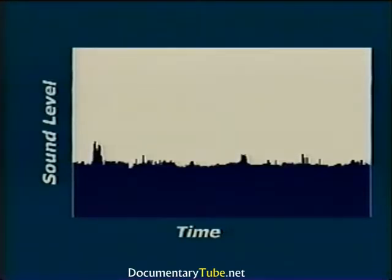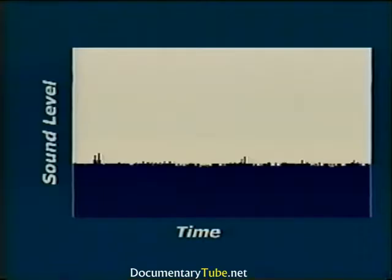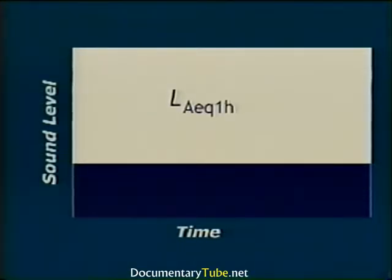To illustrate the equivalent sound level, the sound pressure level recorded at one location over time is first shown. This time history reveals peaks and dips caused by loud and quiet sounds during the time period. Applying the LAeq1H noise descriptor, the sound pressure level averages and the plot flattens out. This sound descriptor should be applied to continuous sounds, such as relatively dense highway traffic.